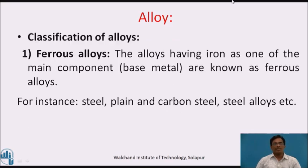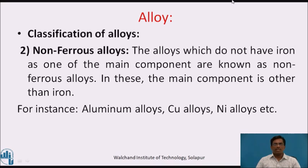Classification of alloys. Basically there are two types of alloys. The first is ferrous alloys — alloys having iron as one of the main base metal components — for instance, steel, plain and carbon steel, steel alloys, etc. The second type is non-ferrous alloys — alloys which do not have iron as the main component; the main component is other than iron — for instance, aluminium alloys, copper alloys, nickel alloys, etc.